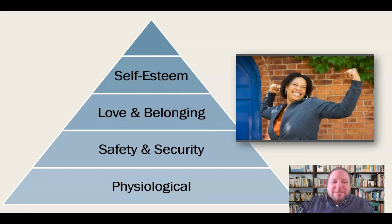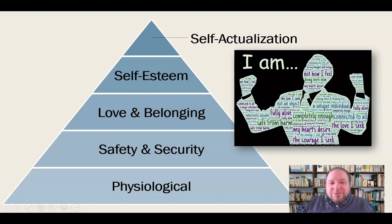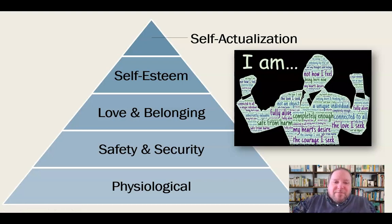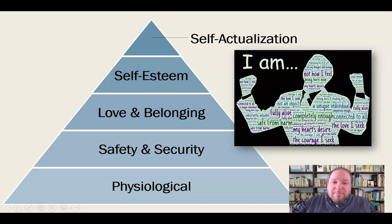Once love and belonging is met, we can start to think about self-esteem: how do I feel about myself, and what do I need to do to feel good about myself? And then finally, once that need is met, we can get into what Maslow called self-actualization — truly understanding ourselves, becoming our best self. As a persuader, we can look at these and ask: where can I meet this audience? Am I meeting them where they're at? We need to understand these needs and persuade people based on where they are right now.